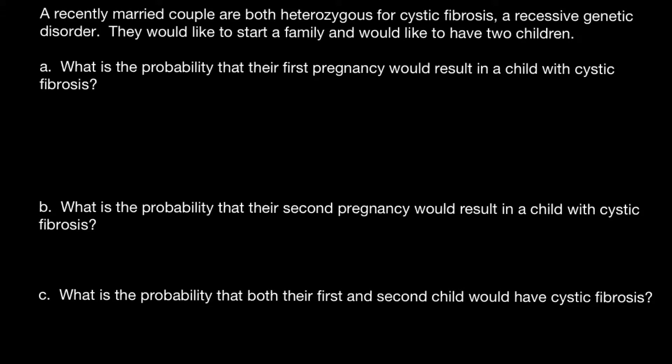Here's the first question: what is the probability that the first pregnancy would result in a child with cystic fibrosis? In order to solve this problem we need to build a Punnett square. We are told that both parents are heterozygous. This genetic disorder is recessive, so when parents are heterozygous that means they have one normal allele — we put capital A for the normal allele — and one recessive allele that causes this genetic disorder — we put small a for this allele.